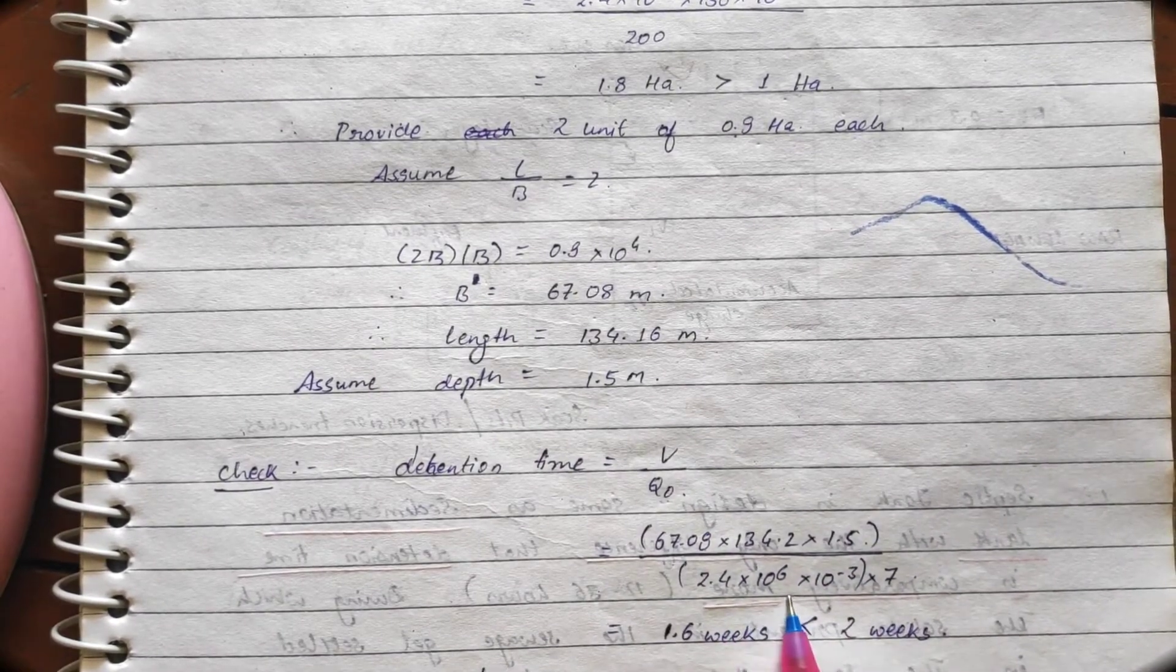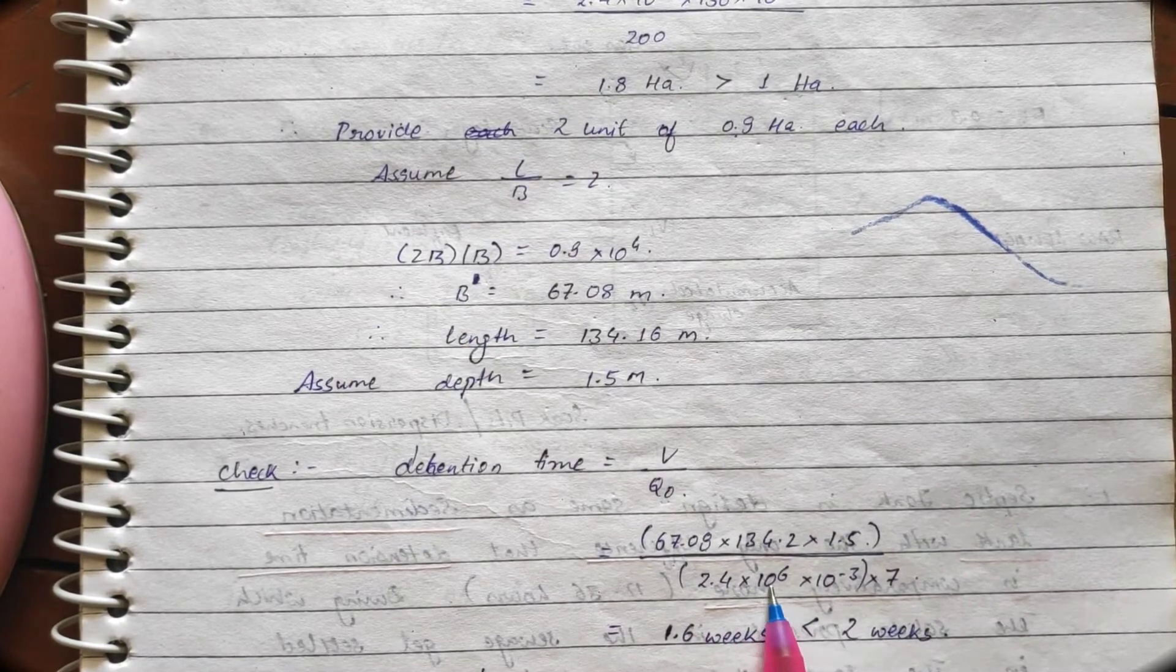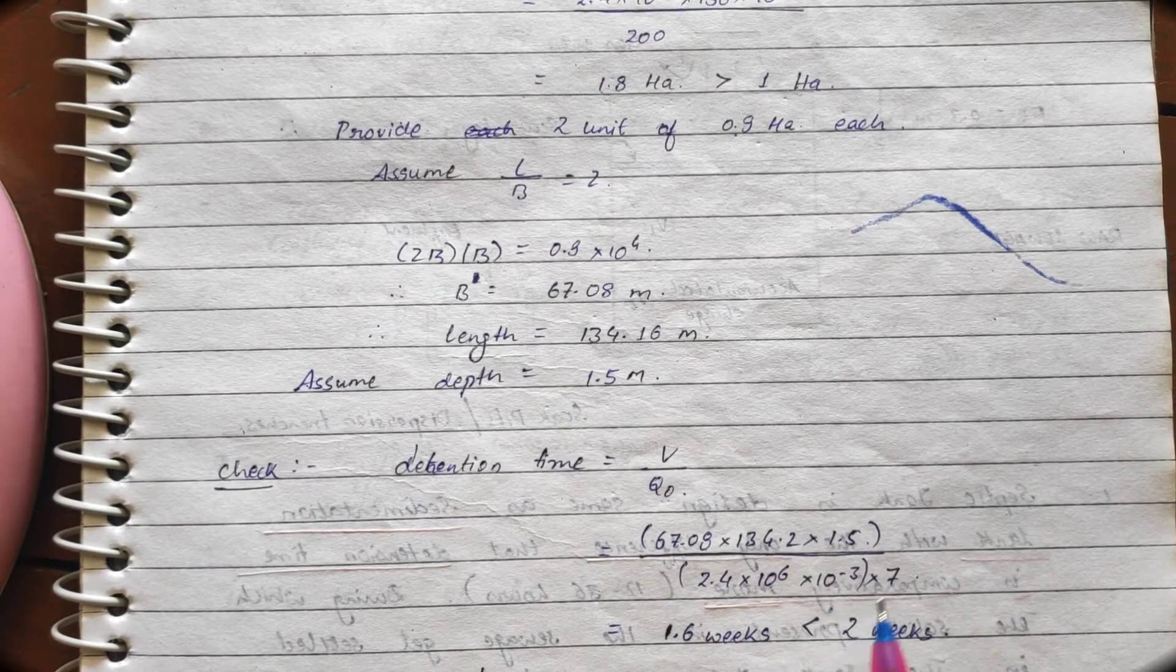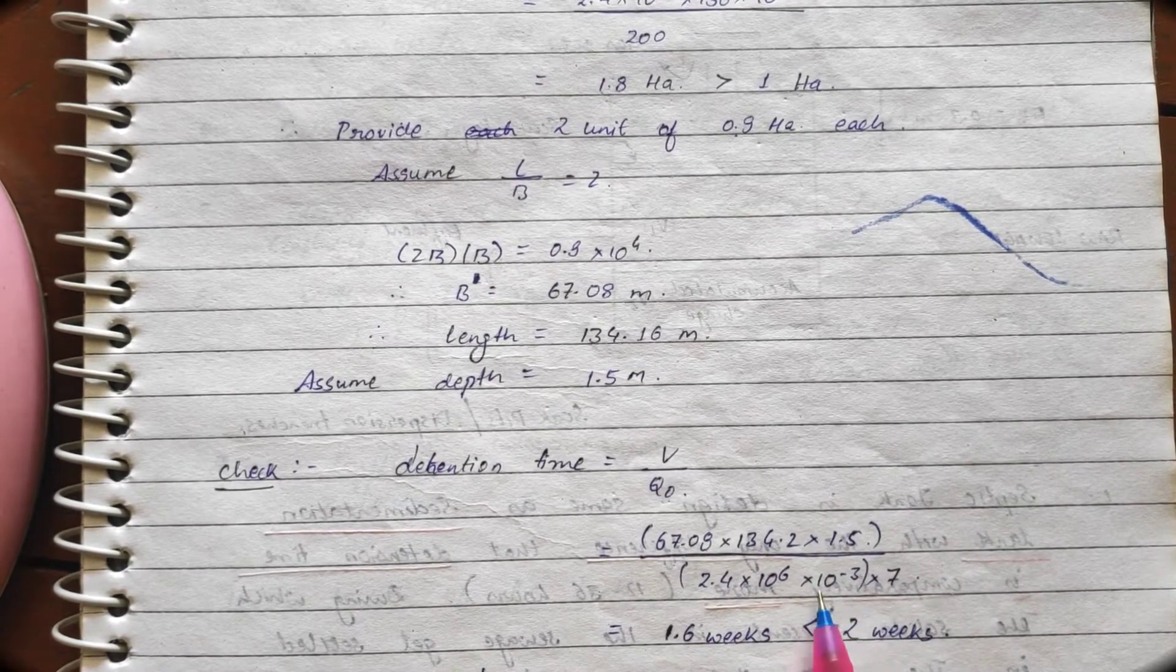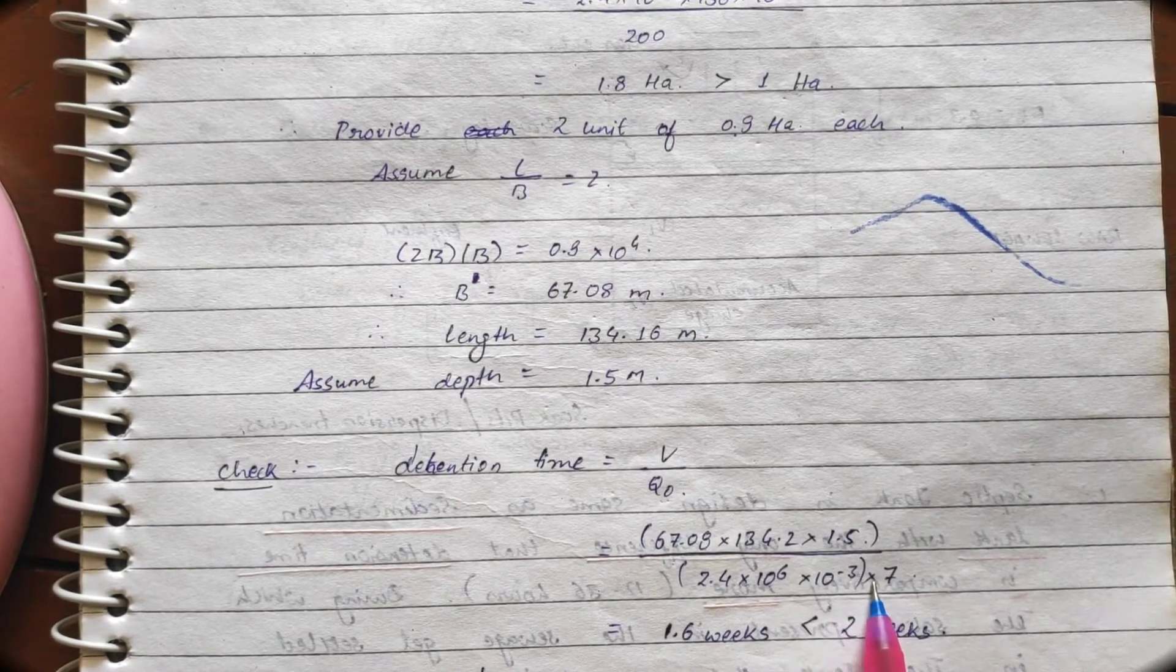This charge is what? 2.4 into 10 raised to power 6. This 2.4 into 10 raised to power 6 was in liters per day. So, we convert it in meter cube. So, we multiplied the things with 10 raised to power minus 3 and multiplied by 7.